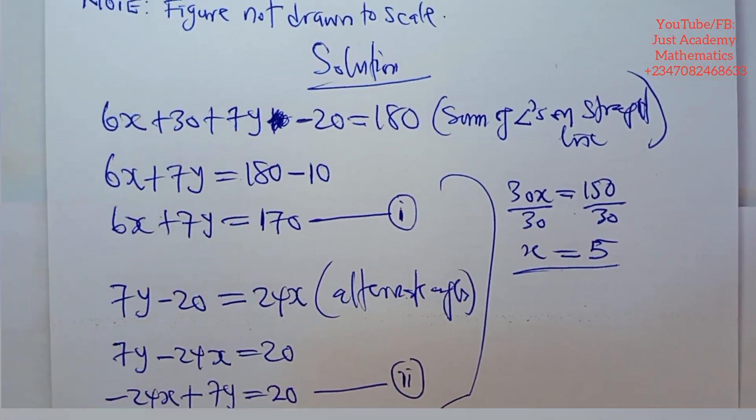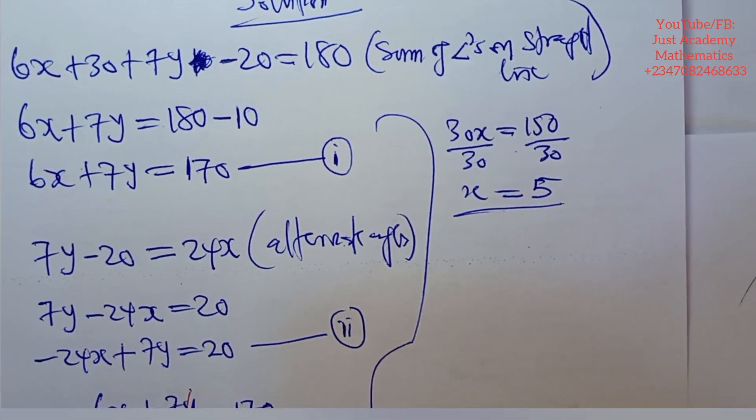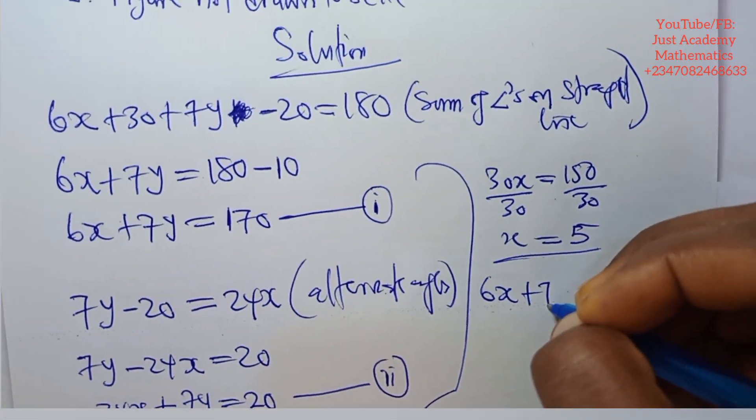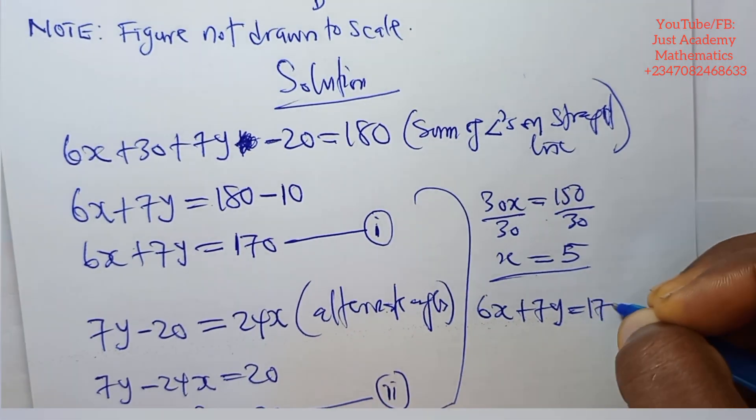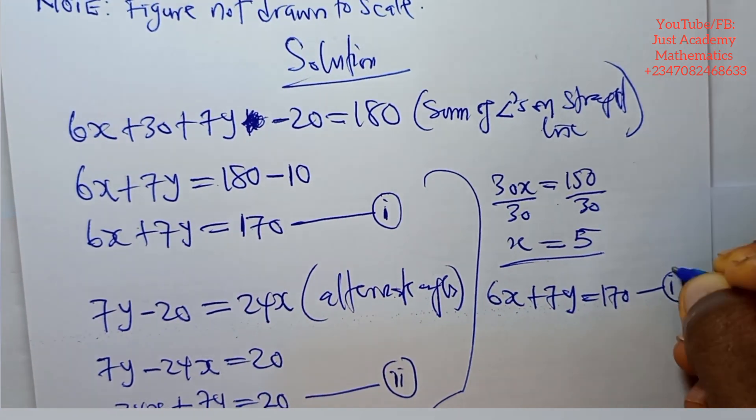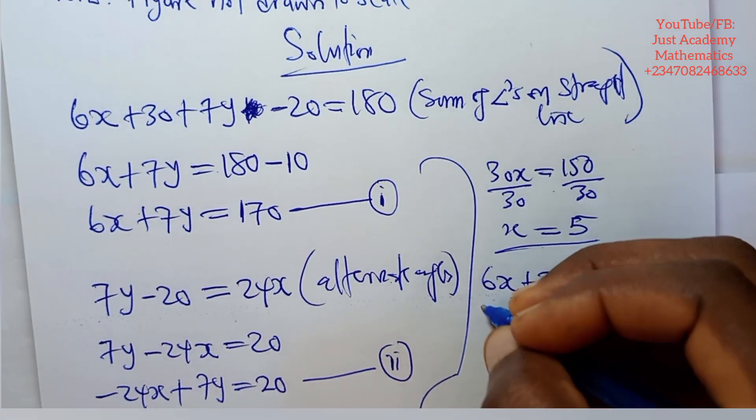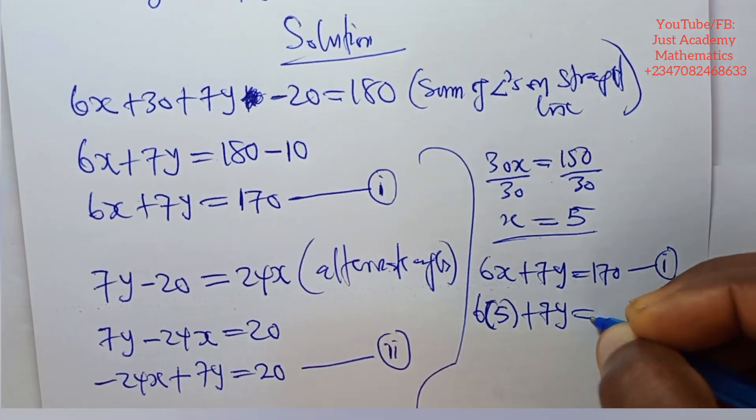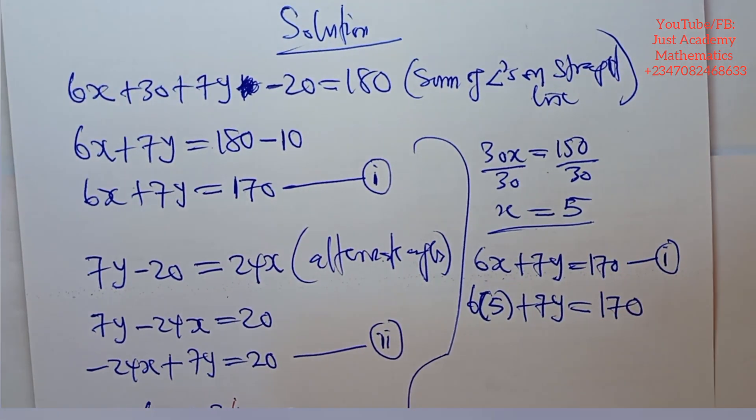Now that we know that x is 5, can we find y? Yes. Let's use any of the equation. From equation 1, 6x plus 7y is equals to 170. Anywhere we see x we put 5. 6 times 5 plus 7y is equals to 170.